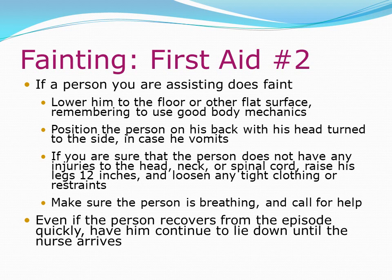Fainting first aid — if a person does faint: Lower them to the floor or other flat surface using good body mechanics. Position the person on their back with their head turned to the side in case they vomit. If there are no injuries to the head, neck, or spinal cord, raise their legs 12 inches and loosen any tight clothing. Make sure the person is breathing and call for help. Even if the person recovers quickly, have them continue to lie down until the nurse arrives.